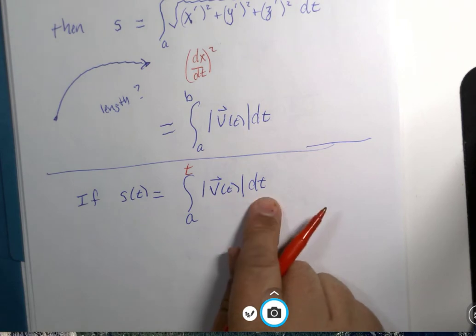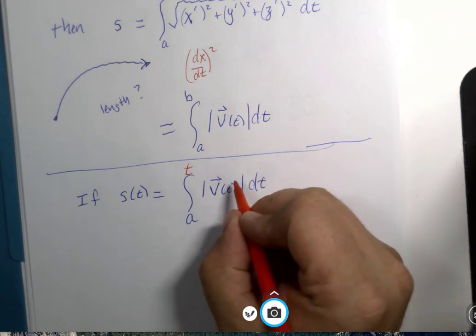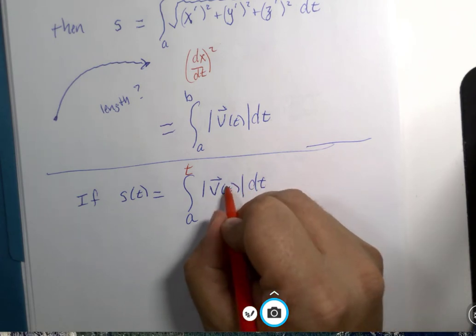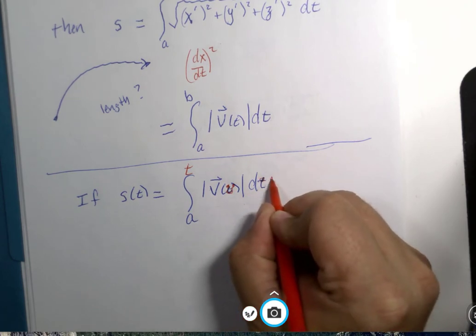So that means these cannot be the letter T. You can't use the same variable for the two completely different purposes. So I could call it smiley face. We'll just call this smiley face.